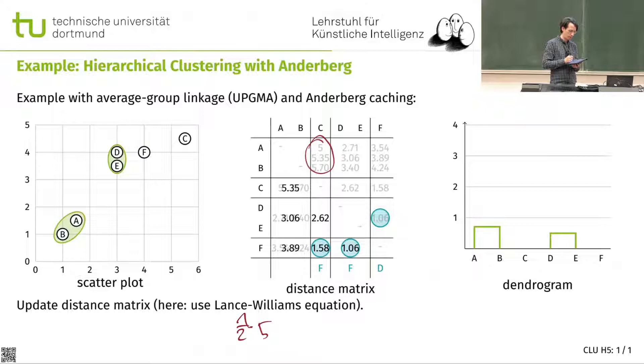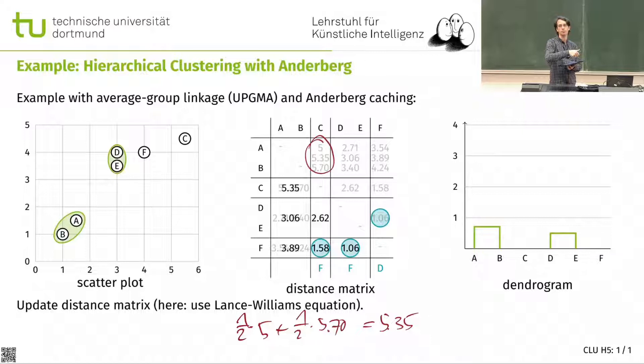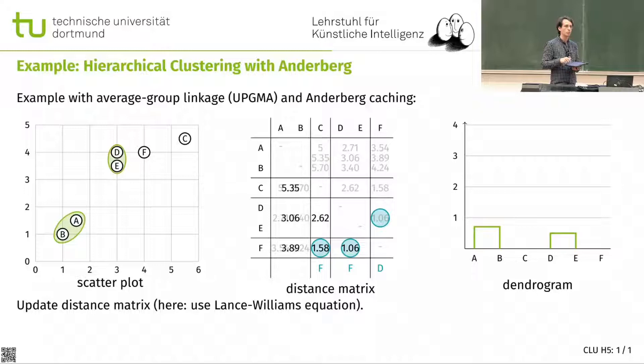I literally have one half times five plus one half times 5.70, and that is this distance. That's because I'm merging clusters with one object and one object — that's still an easy case where the weighted average would be the same.